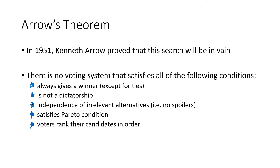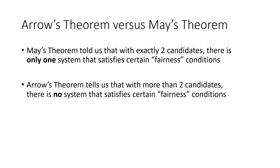Let's compare Arrow's Theorem to May's Theorem, which we studied in a previous lecture. May's Theorem told us that when we have exactly two candidates there is one and only one system — namely majority rule — that satisfies certain fairness conditions. But Arrow's Theorem says, with the list of fairness conditions we talked about, there is no system, not even one system, that satisfies all of those conditions.